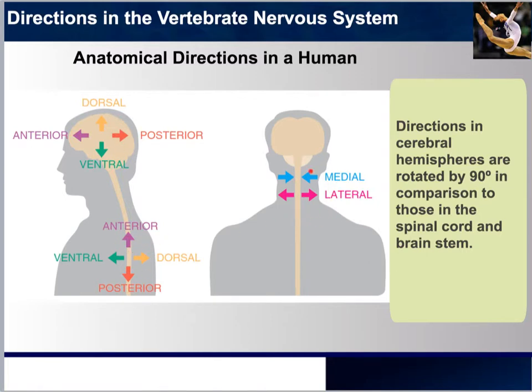The medial-lateral axis has not changed: medial points toward the midline, whereas lateral is toward the outside. These anatomical directions will come in handy, especially as we start looking into chapters 6, 7, and 8, and we start describing the specific sections and parts of our thalamus.